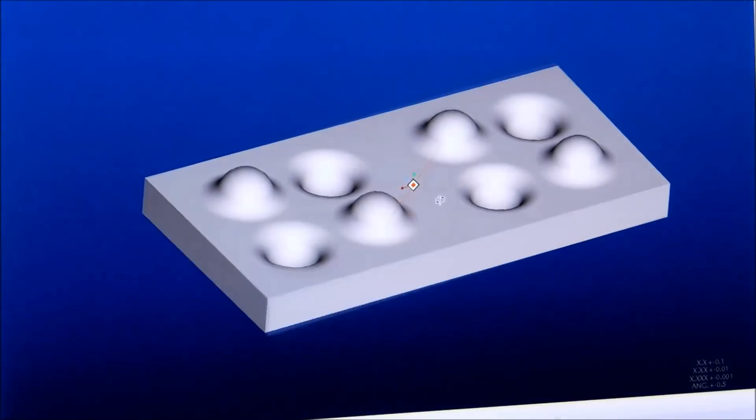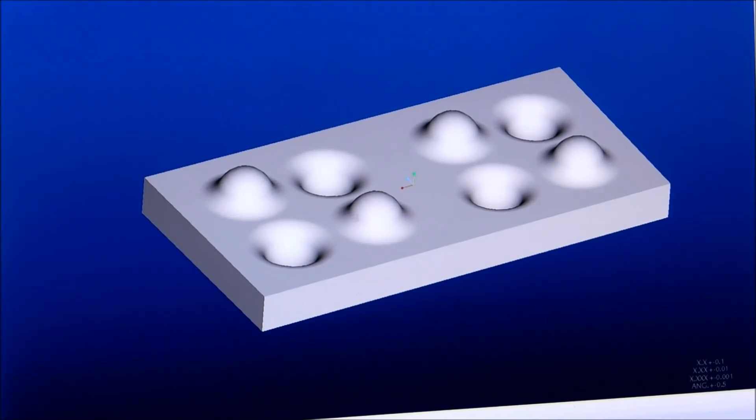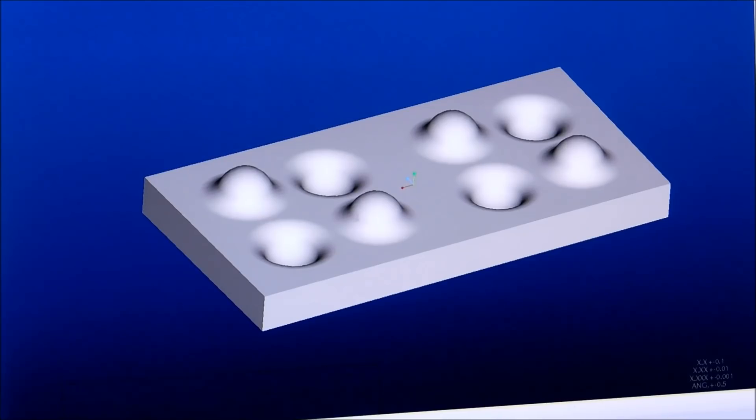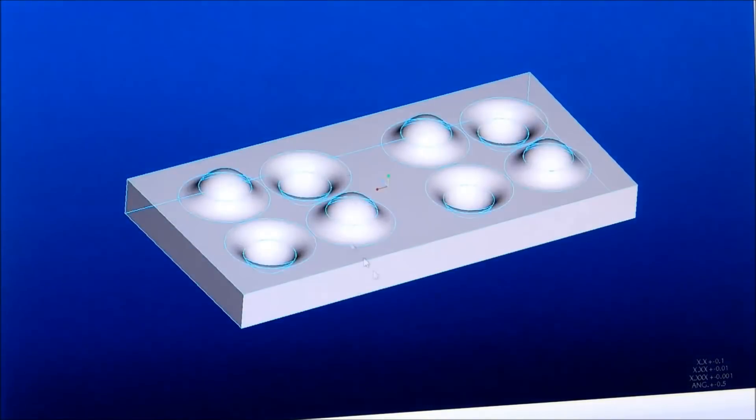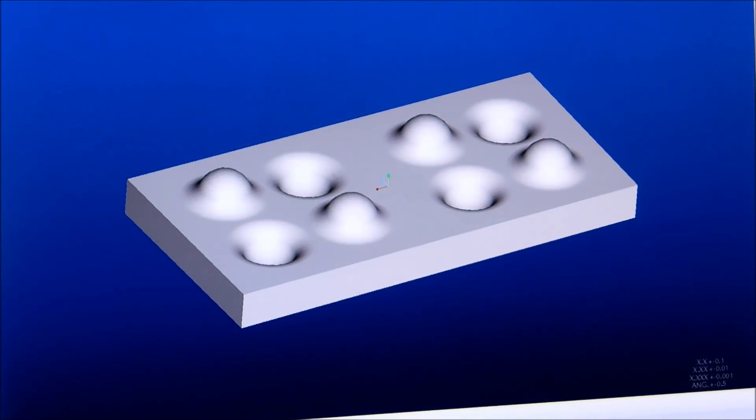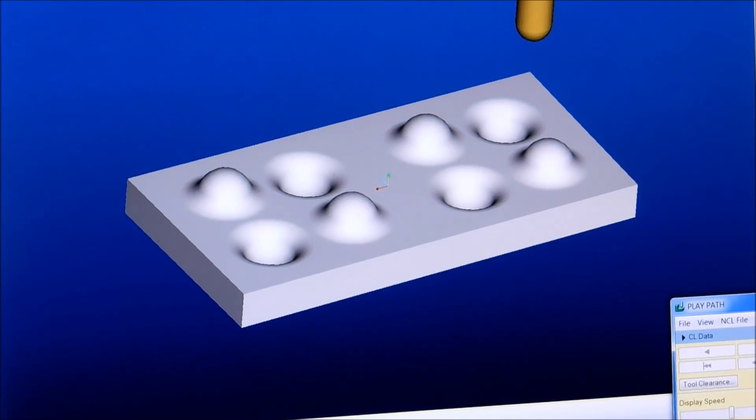Now, the way this is going to be done, I can switch over to the actual manufacturing model on this and show you how it's going to be done. The ball end mill is going to walk back and forth on this piece and sculpt this out of a solid block.